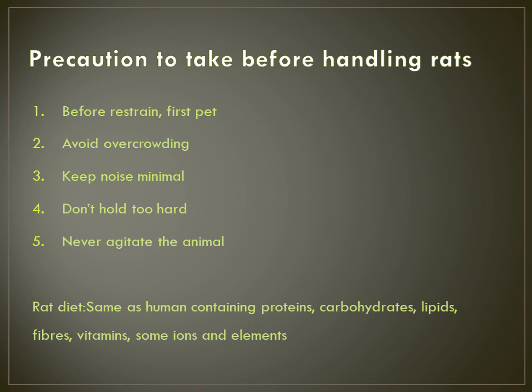What should we feed the rat? It is the same as for humans — a diet containing proteins, carbohydrates, lipids, fibres, vitamins, some ions and elements. It is commonly available as commercial food approved by the Government of India.